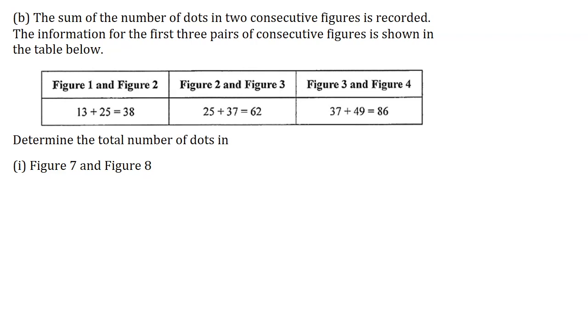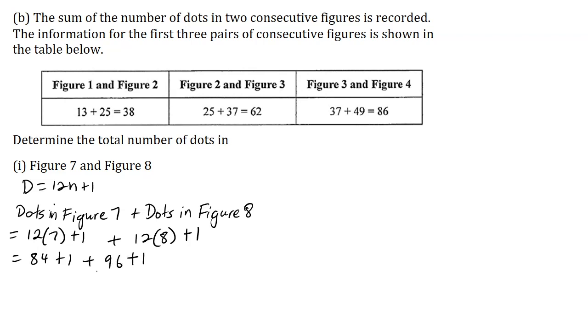Determine the total number of dots in part 1, figure 7 and figure 8. Now we found in part A that the number of dots here is given by 12n plus 1. So I could write here that dots in figure 7 plus dots in figure 8. This is equal to 12 multiplied by 7 plus 1 and this will be 12 multiplied by 8 plus 1. 12 times 7 is 84 plus 1 plus 12 times 8 is 96 plus 1. So this is 85 plus 97 which gives here 182 dots.